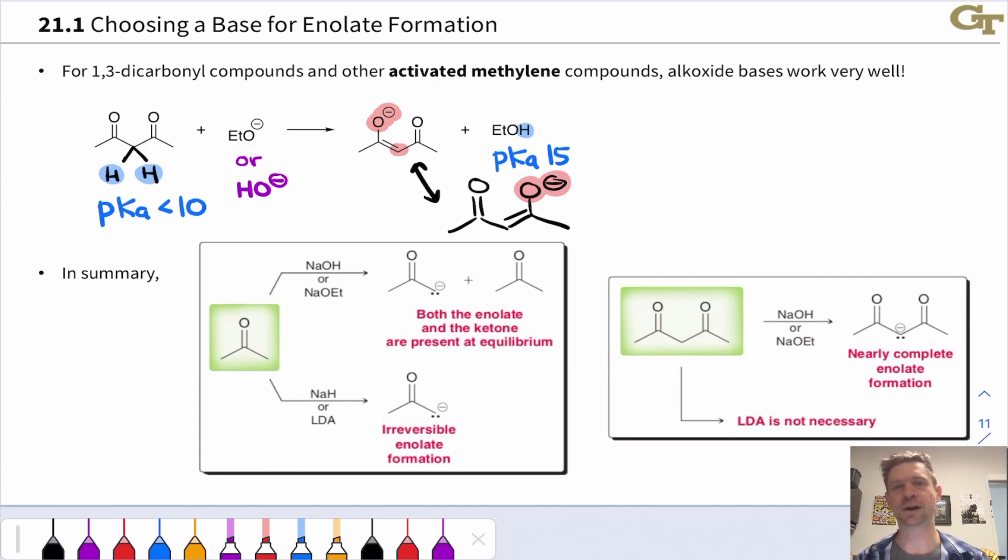With beta-dicarbonyl compounds and other so-called activated methylene or active methylene compounds where we have a methylene or CH2 group flanked by two electron-withdrawing groups, now we can just use hydroxide or alkoxide bases and we get irreversible and complete deprotonation to give the stabilized enolate. So here, LDA is not necessary and is generally not employed because it's a pain in the butt to handle relative to something like sodium hydroxide or sodium alkoxides.